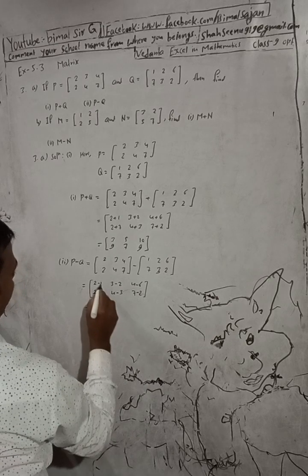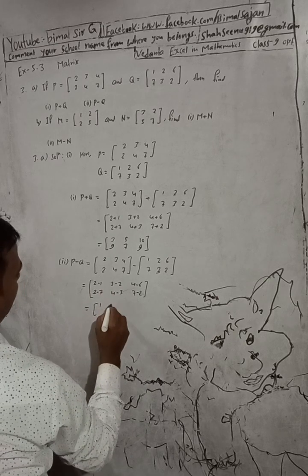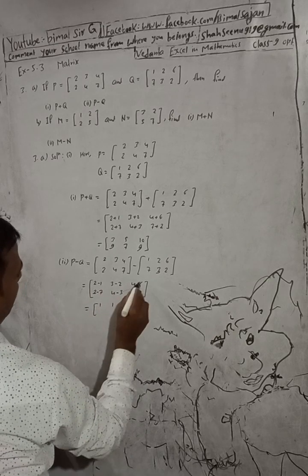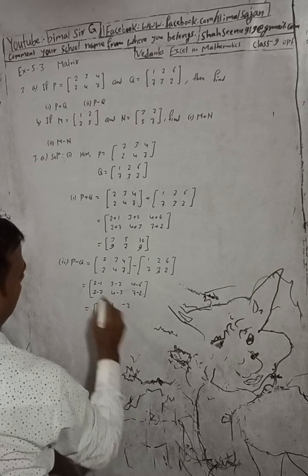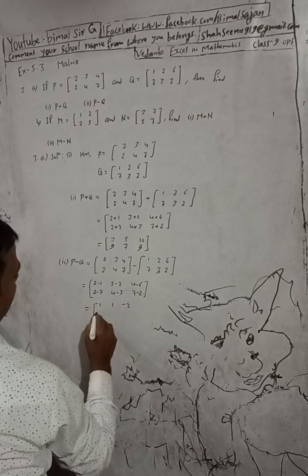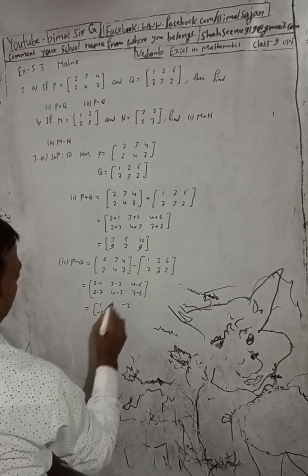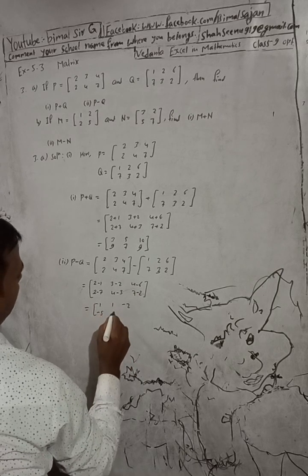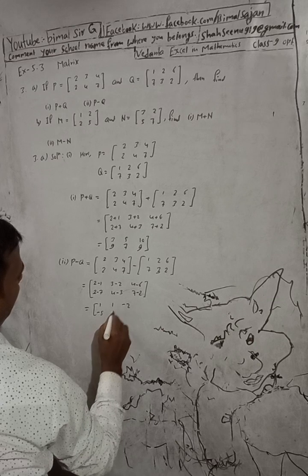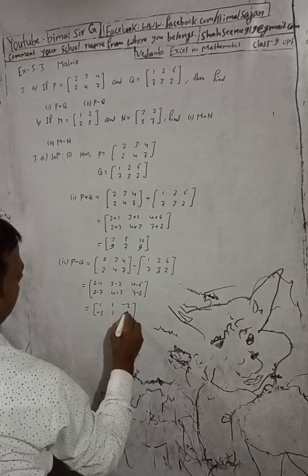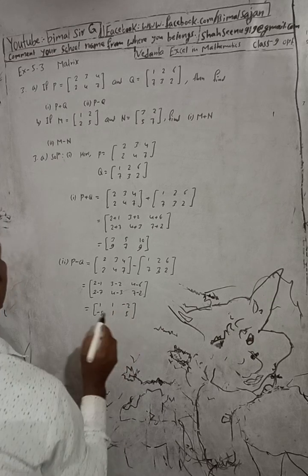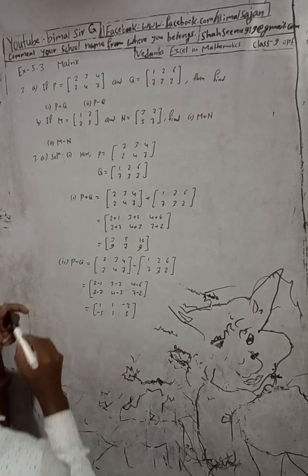Computing the differences: 2 minus 1 is 1, 3 minus 2 is 1, 4 minus 6 is minus 2, 2 minus 7 is minus 5, 4 minus 3 is 1, 7 minus 2 is 5. So the result is [1, 1, -2 / -5, 1, 5]. This is the answer for A number.